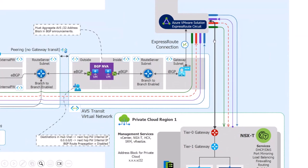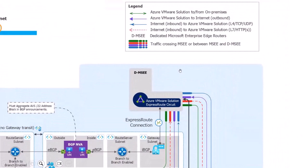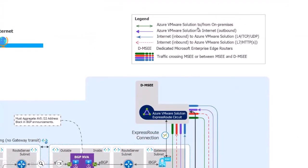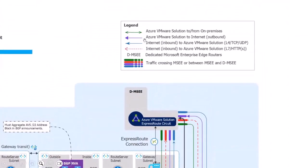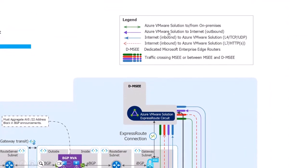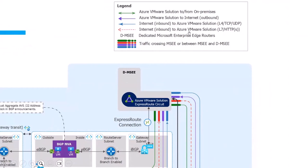Is this because maybe you're in a region without Global Reach? Correct — this could be a region where you don't have Global Reach, or a situation where you'd like to have all traffic monitored and inspected. The green line indicates AVS to and from on-premise. The purple line indicates AVS to internet. The blue line indicates internet inbound to AVS — L4, TCP, or UDP. And the red line indicates internet inbound to AVS — L7 and HTTPS.